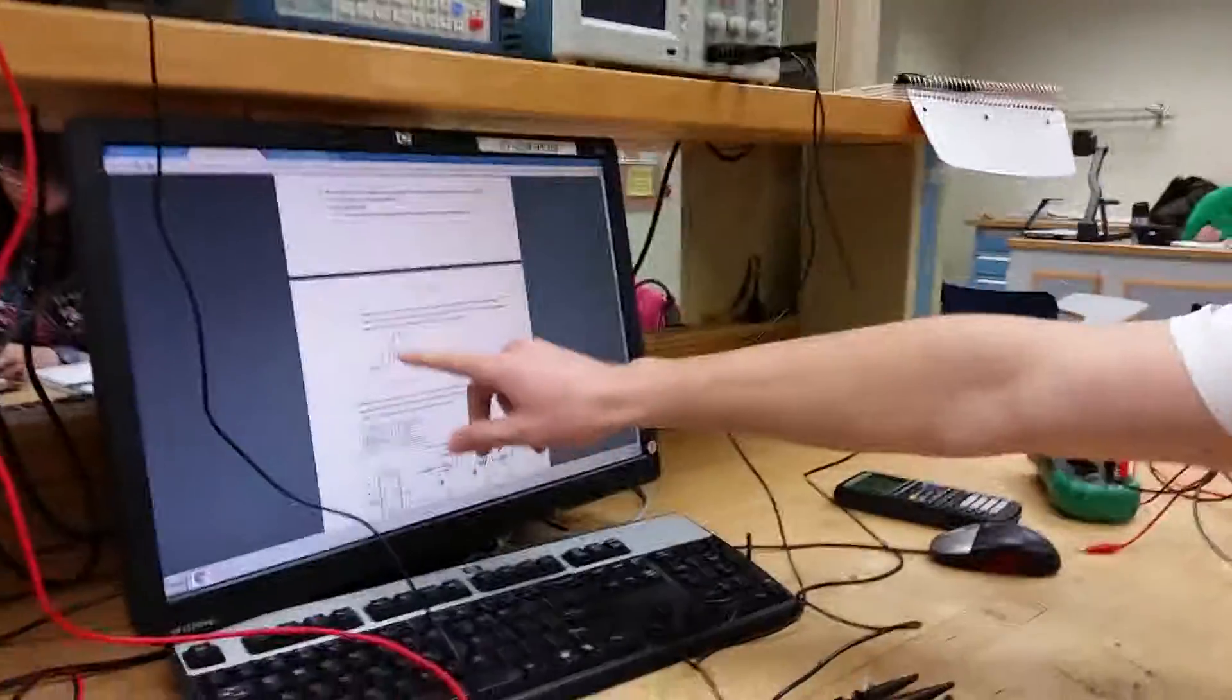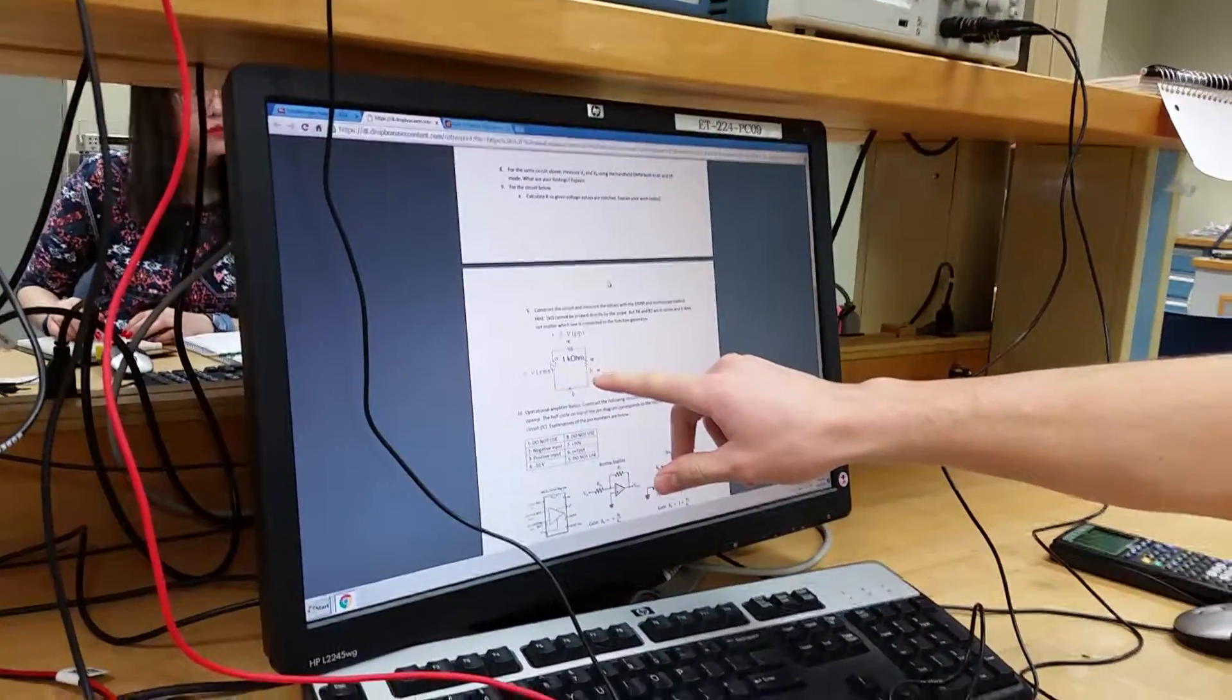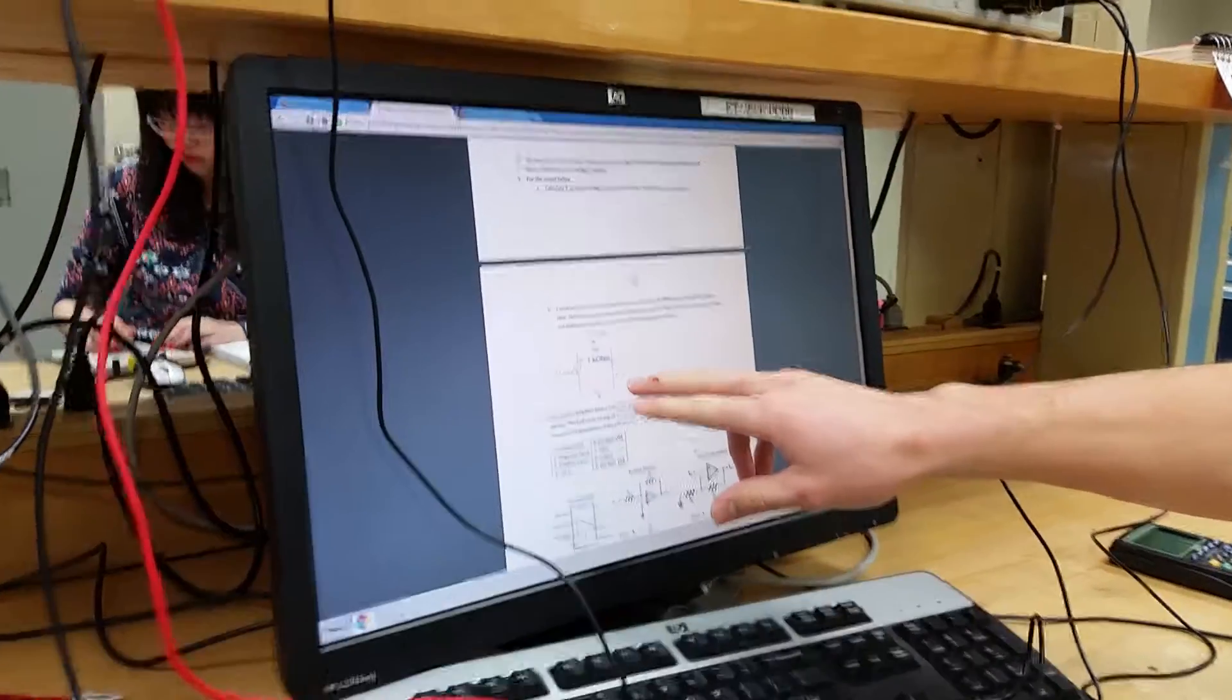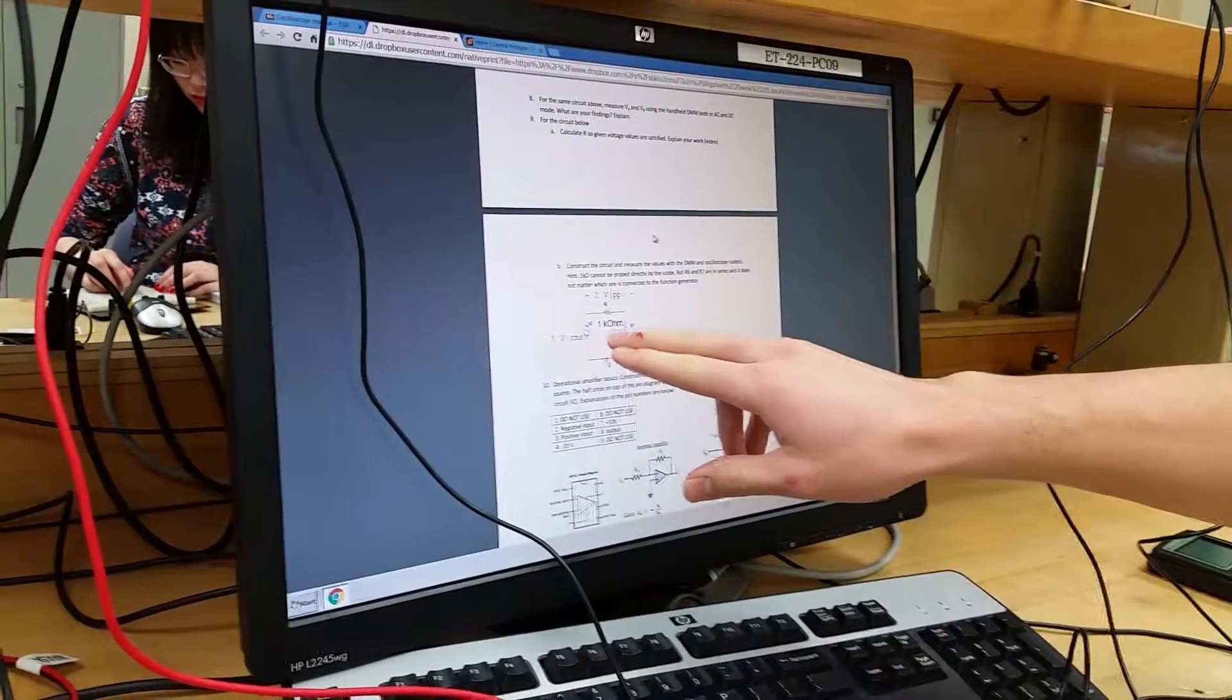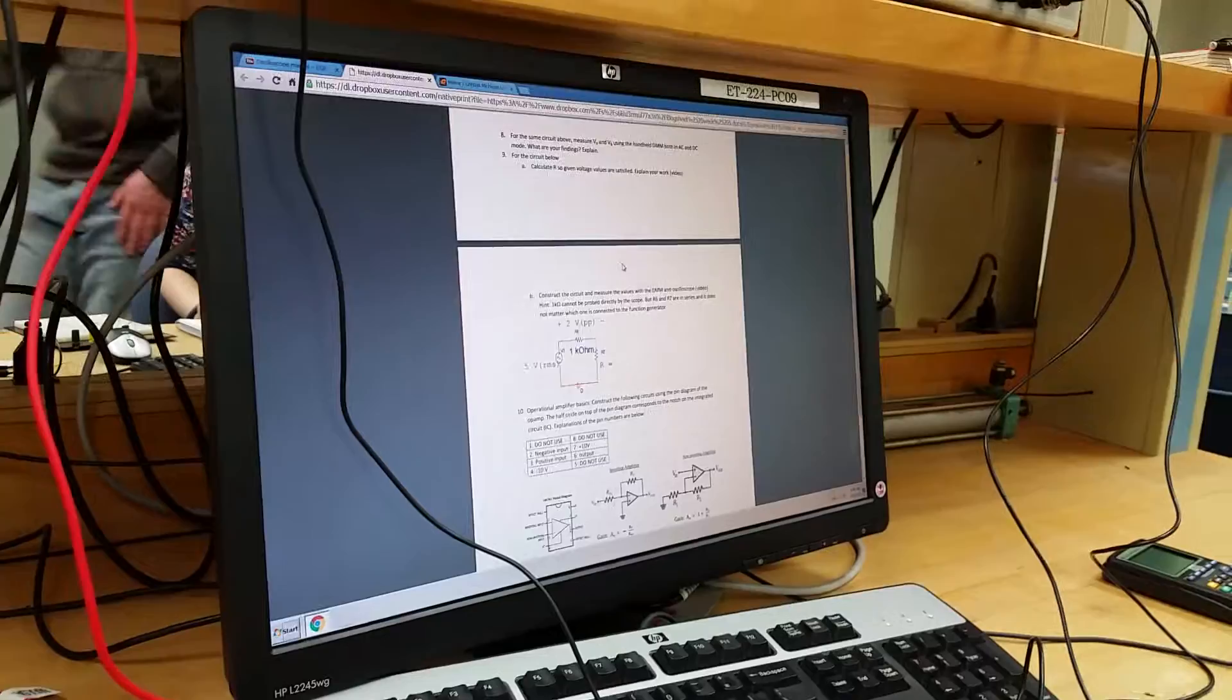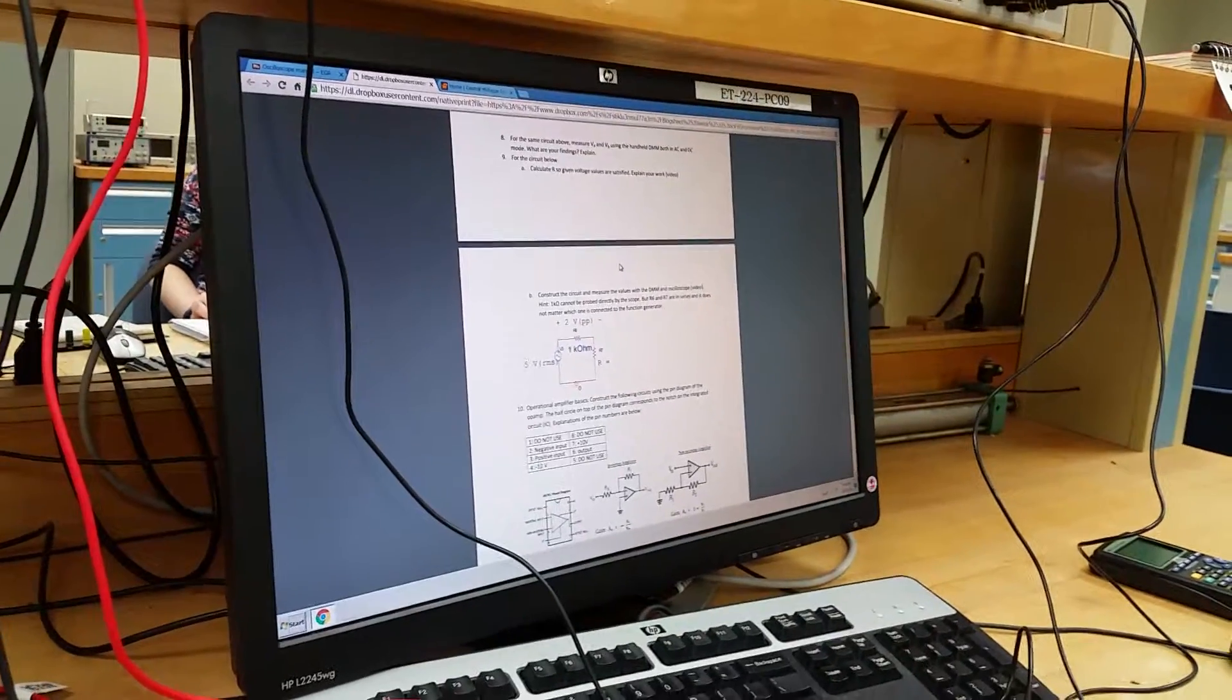0.7 volts drops across the first one, and the remaining 4.3 volts drops across the second one since we're putting in 5 volts RMS. This is roughly 6 times the voltage drop across the first 1k ohm, so this resistance has to be 6 times greater. We got 6 kilohms for the second resistor.